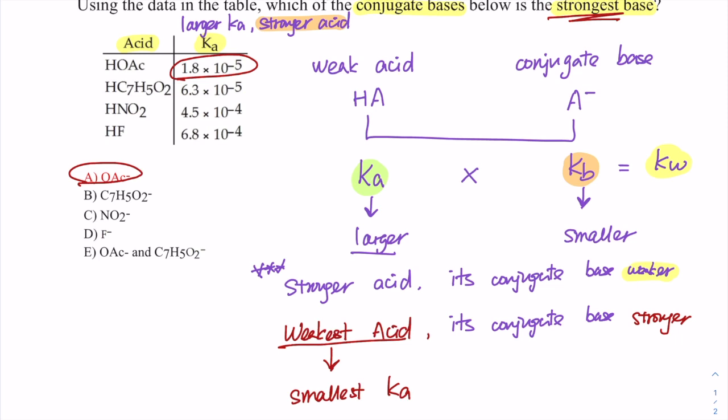This question could be simple but asks you about Ka values, how we use that to express the strength of acid, and how the weak acid and their conjugate base are related. Thank you for watching.